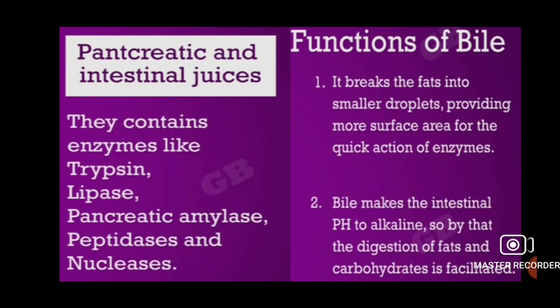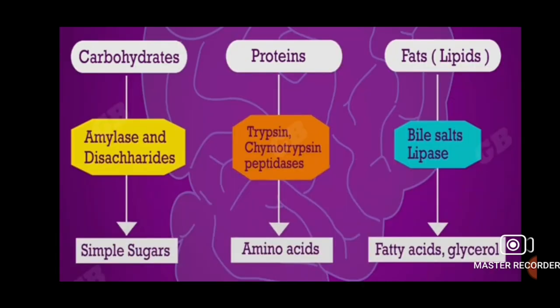Bile makes the intestinal pH alkaline, which facilitates digestion of both fats and carbohydrates. For carbohydrates, amylase and disaccharides break them into simple sugars. For proteins, trypsin, chymotrypsin, and peptidases break them into amino acids. Fats, also known as lipids, are broken down by bile salts and lipase into fatty acids and glycerol.